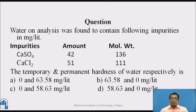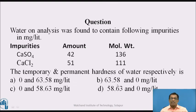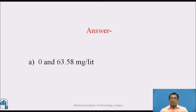Pause the video and answer this question: Water on analysis was found to contain calcium sulphate 42 mg/L and calcium chloride 51 mg/L, with their respective molecular weights. What are the temporary and permanent hardness respectively? The answer is A: 0 and 63.58 mg/L — since both salts produce only permanent hardness, there is no temporary hardness.